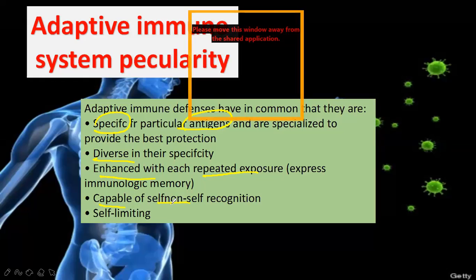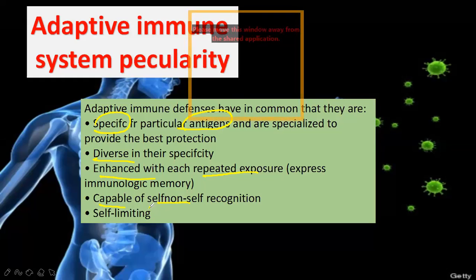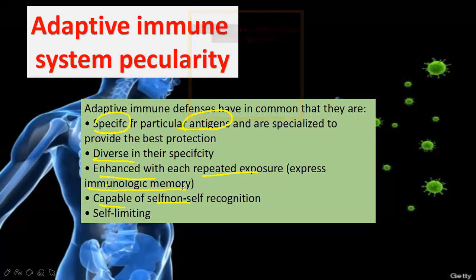For example, a person living in very good conditions with a fully developed home — their child never exposed to dust, never exposed to soil, never exposed to bacteria. When they are exposed, they get very severe infection. But the poor child always playing in the sand, always exposed to bacteria — they have better immunity. Exposure makes defense better; exposure makes adaptive immunity stronger.